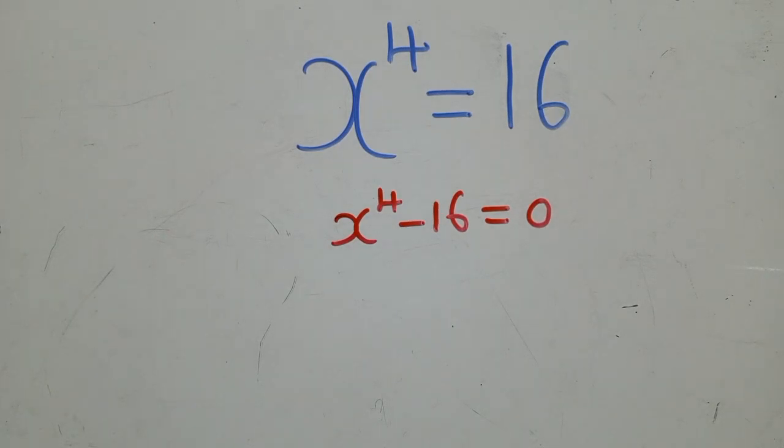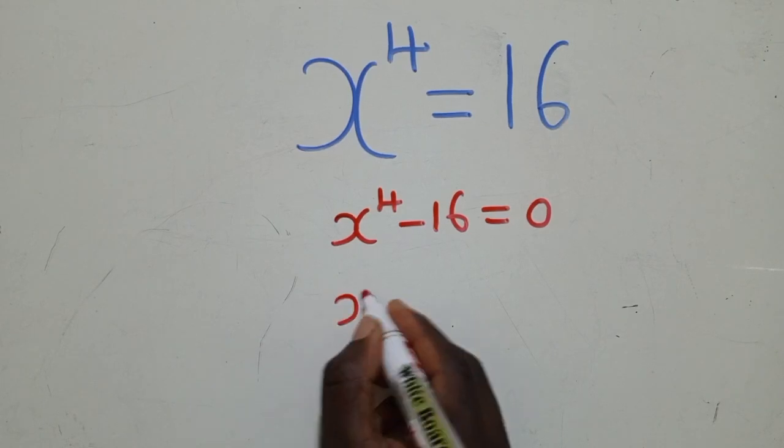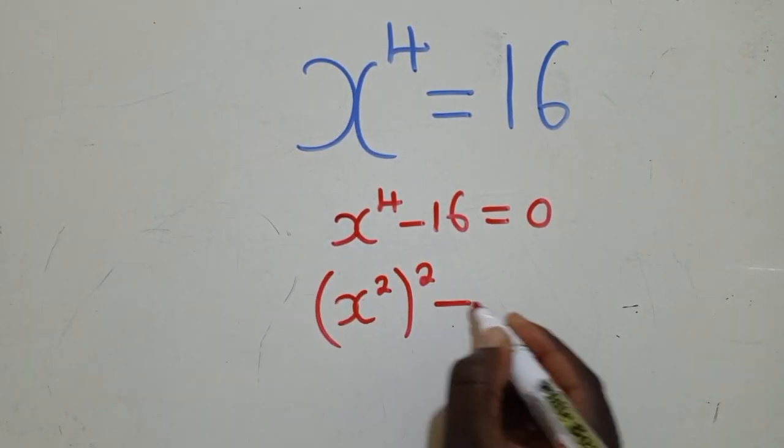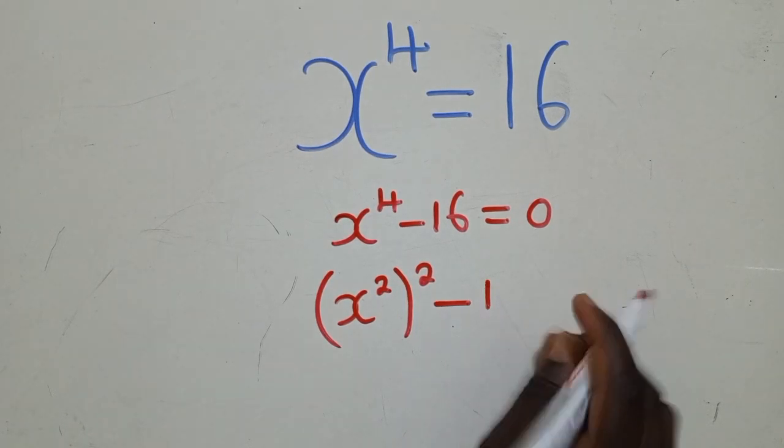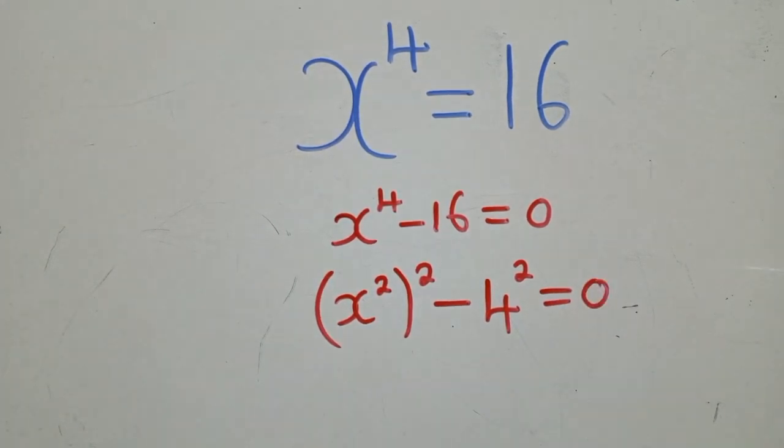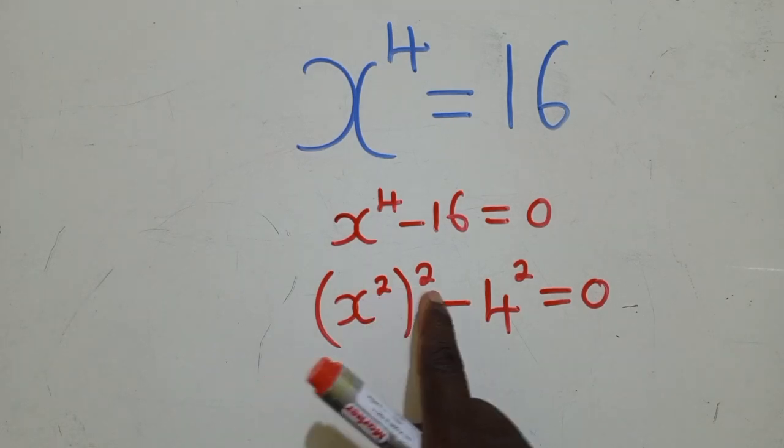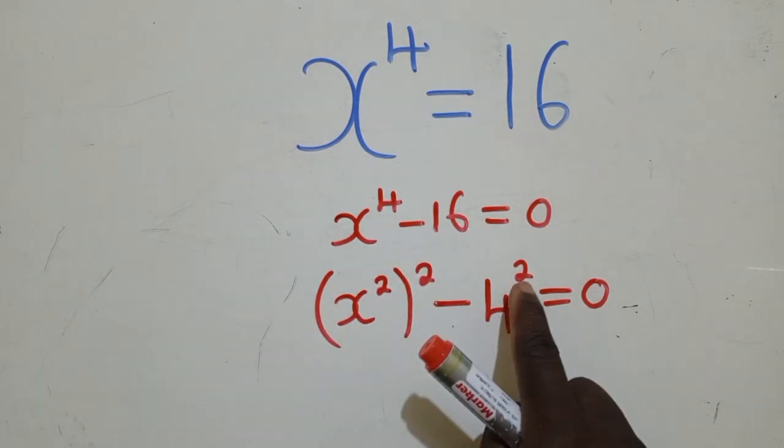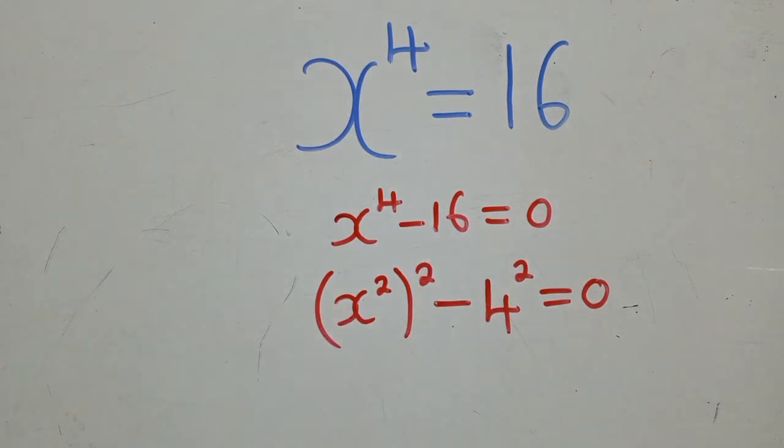After putting it in standard form, we apply difference of two squares. So, difference of two squares can only be applied if we do something like this. This way, it can work. Difference of two squares can really be applied. Of course, we know that 2 by 2, since they are both powers, they'll give us a 4. And 4 power 2, it will give us a 16.